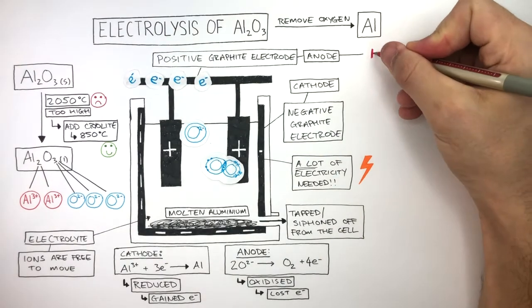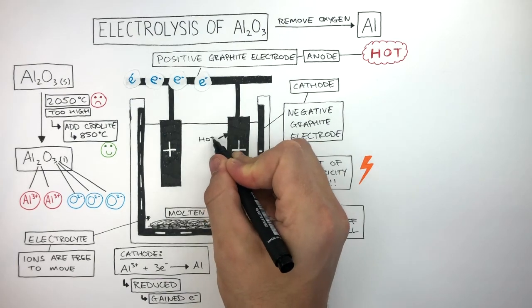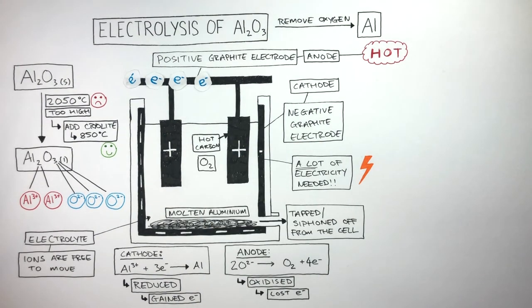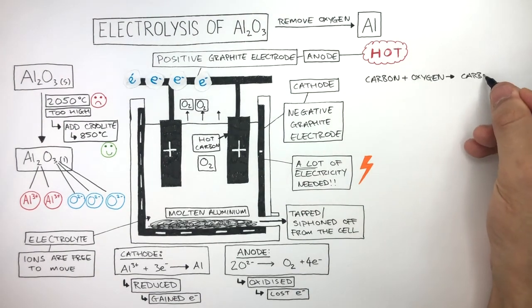The anodes are hot due to being heated to very high temperatures of 850 degrees Celsius. This is not a good thing, as the hot carbon reacts with the oxygen formed at the anode. Now, mainly oxygen gas is formed at the anode. However, some of the oxygen gas reacts with the carbon, forming carbon dioxide. And we can write this as a word equation where carbon plus oxygen forms carbon dioxide.